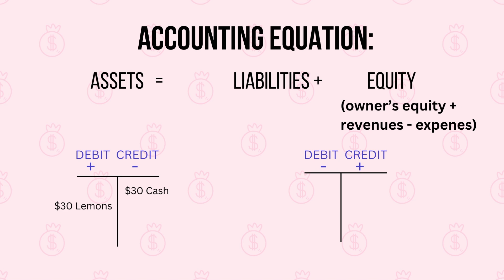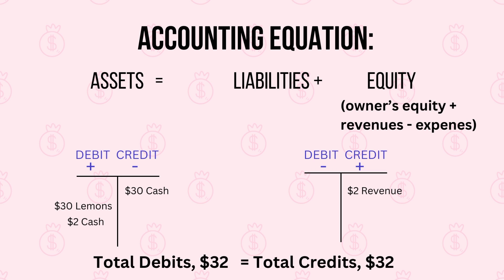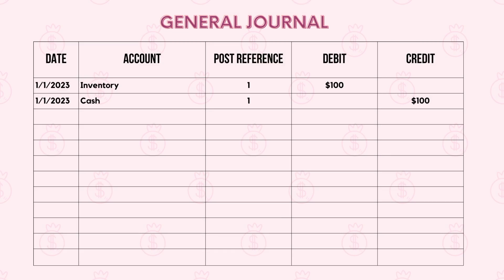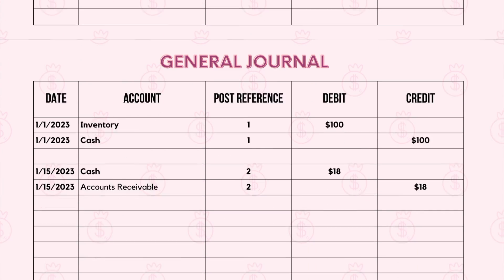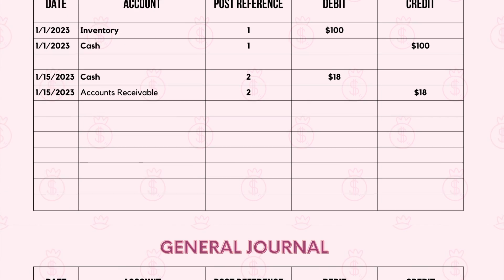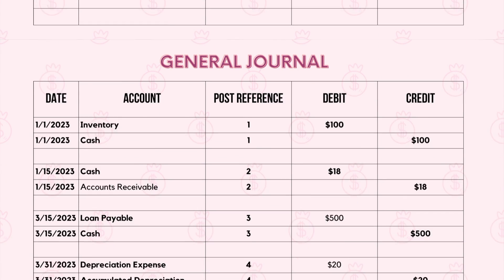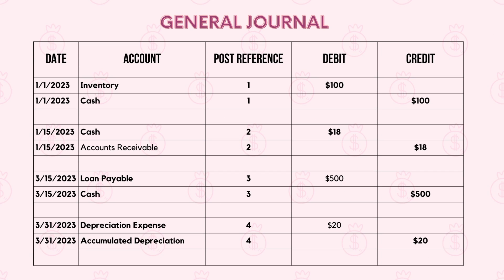Let's say you sell a cup of lemonade for $2. Once again we have two sides to the transaction. You record the increase in your cash account because you received money, and on the other side of the accounting equation you increase your revenue. Now let's consider four common simple transactions. First, buying inventory with cash: you debit your inventory, an asset account, and credit your cash, also an asset account. Second, receiving payment from a customer: you debit your cash, an asset account, and credit your accounts receivable, also an asset account. Third, paying off a loan: you debit your loan payable, a liability account, and credit your cash, an asset account. Fourth, recording depreciation of equipment: you debit your depreciation expense and credit accumulated depreciation, which is a contra asset account — in essence, it's reducing your equipment account.